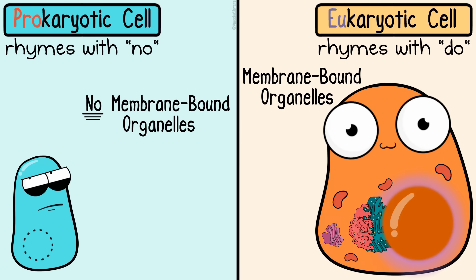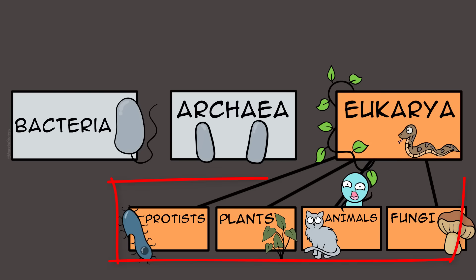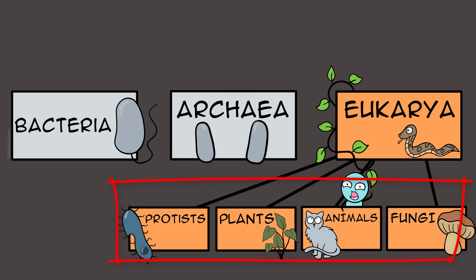A big indicator of eukaryotic cells is the nucleus. Eukaryotic cells do have a nucleus to contain their DNA. Depending on what type of eukaryotic cell it is, it could have different types of membrane-bound organelles. For example, a plant cell is likely to have chloroplasts while an animal cell would not.